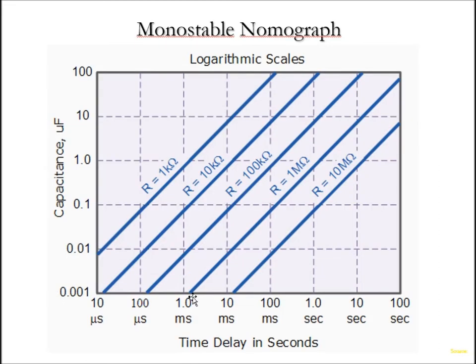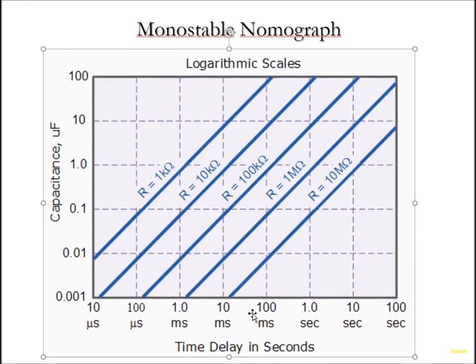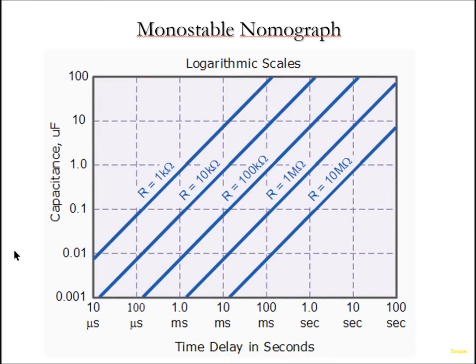Some people don't want to do the calculations, so they make fun things like nomographs where they lay it all out. This nomograph shows my capacitor value for C1 in microfarads. These lines show my R1 values in ohms, kilohms, and megohms. Wherever these things meet, I drop down. If I've got a 10k resistor and a 1 microfarad capacitor, I'm going to have a time pulse of a little over 10 milliseconds.